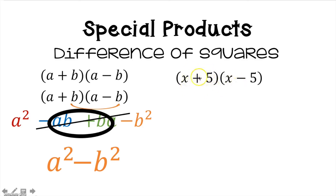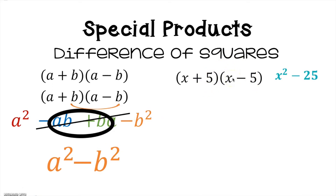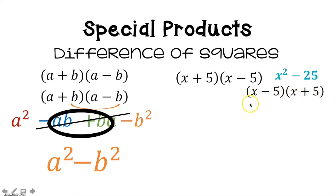So for something like (x + 5)(x − 5): it's your first term squared, which is x squared, minus your last term squared. Five squared is 25, giving you x squared minus 25. This also works if you have (x − 5)(x + 5) — it doesn't matter the order as long as you've got opposite signs with the same contents. If it's x and x, five and five, with just different signs in the binomials, you've got a difference of squares.